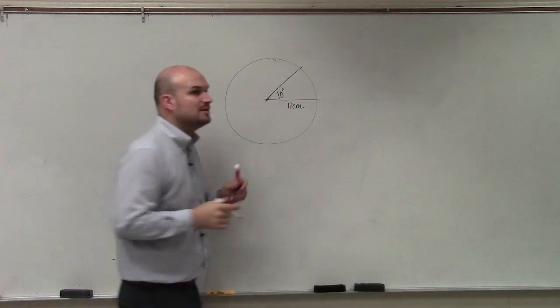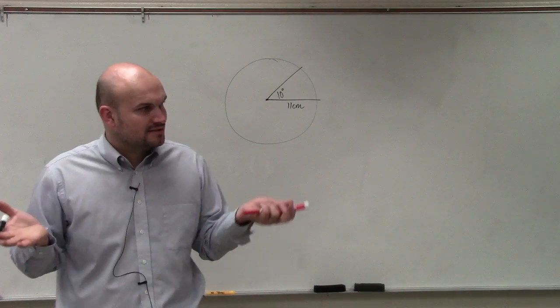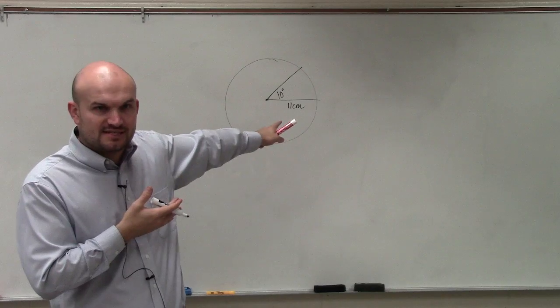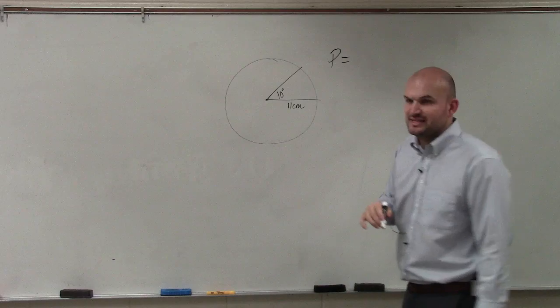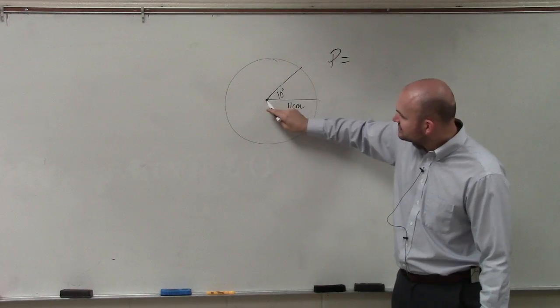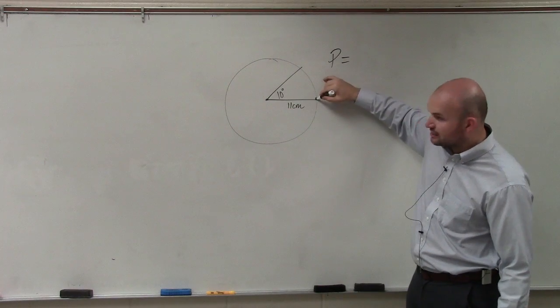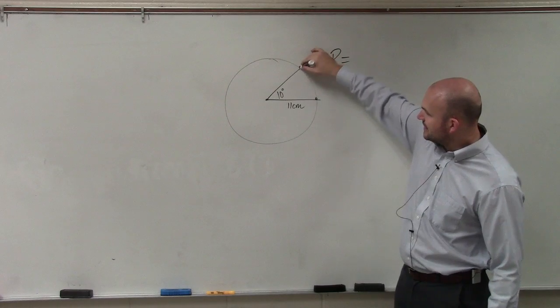And then it says find the perimeter of that sector of the disk right there. Well, if you guys remember in geometry, perimeter is basically going to be the distance around. So if the distance from the center to my outer edge is 11, what do you guys think this length has to be?